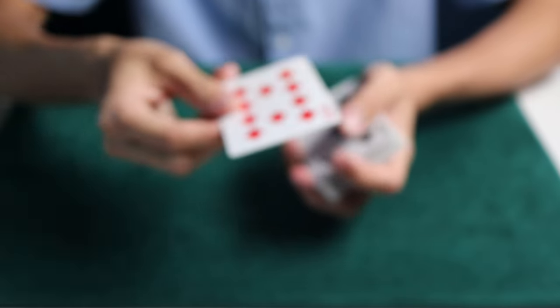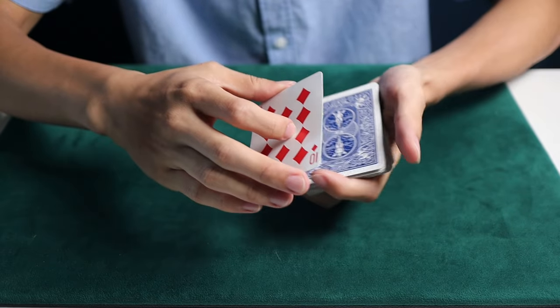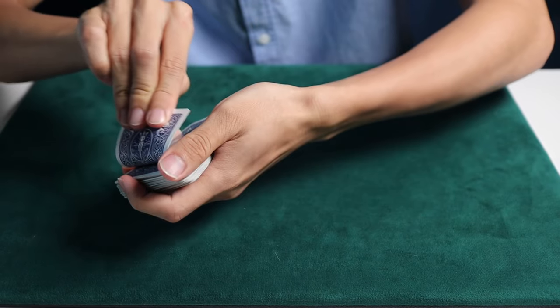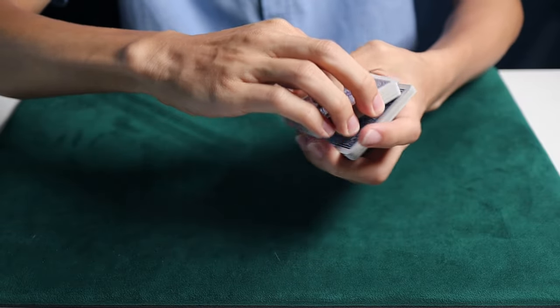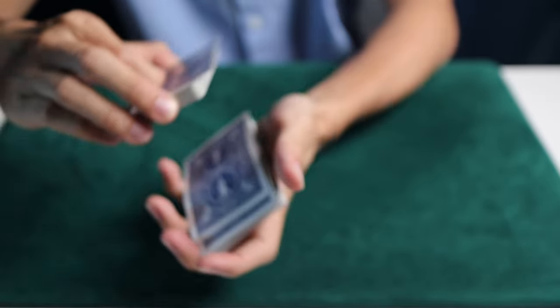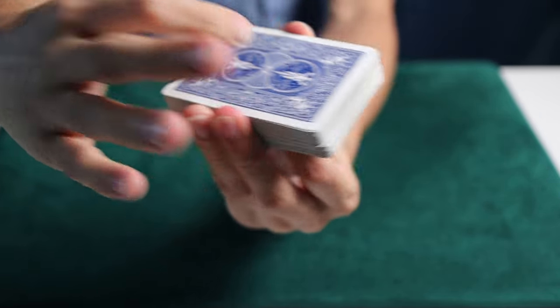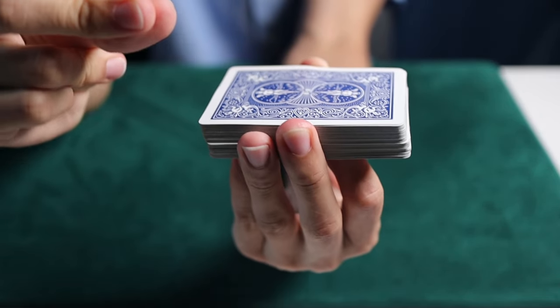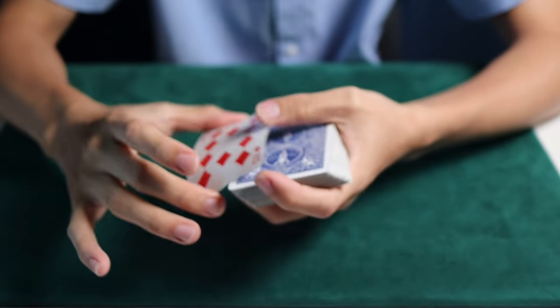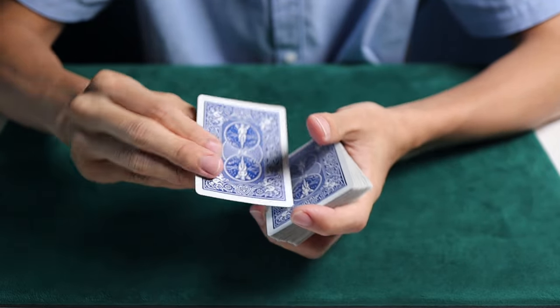So the 10 of diamonds is right here. So now I'm going to bend the card like this. I bend the card like this, as you can see. So now the 10 of diamonds is right here in the middle. So look at the top card. I just count to three. One, two, three. And there's one card, jump to the top. And that's the card the spectator picked, the 10 of diamonds.